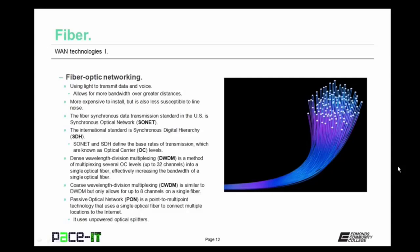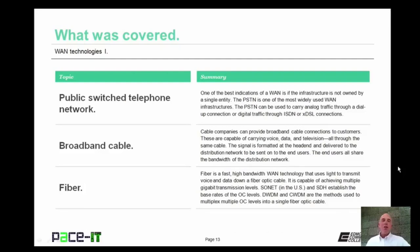Dense Wavelength Division Multiplexing is a method of multiplexing several optical carrier levels — up to 32 of them — into a single fiber optic cable, effectively increasing the bandwidth of that single optical fiber. Alternatively, you could use CWDM — Coarse Wavelength Division Multiplexing — which is similar to DWDM but allows for only up to 8 channels on a single fiber. When fiber optic is delivered to the premise, it's usually delivered over a passive optical network, or PON — a point-to-multipoint technology that uses a single optical fiber to connect multiple locations to the internet using unpowered optical splitters.